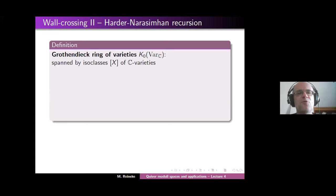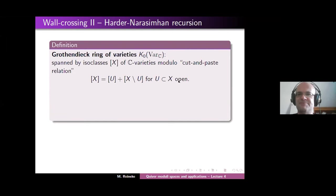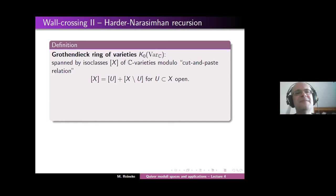First of all, we take a free abelian group on all isomorphism classes of complex quasi-projective algebraic varieties. Then we mod out a relation — the so-called cut-and-paste relation — which says a variety X equals the sum of U and X minus U whenever U in X is an open subset. We simulate the usual Grothendieck group definition by claiming exact sequences are triples consisting of an open subset, the whole thing, and the closed complement. Whenever we have such a triple, we define X as U plus the closed complement.